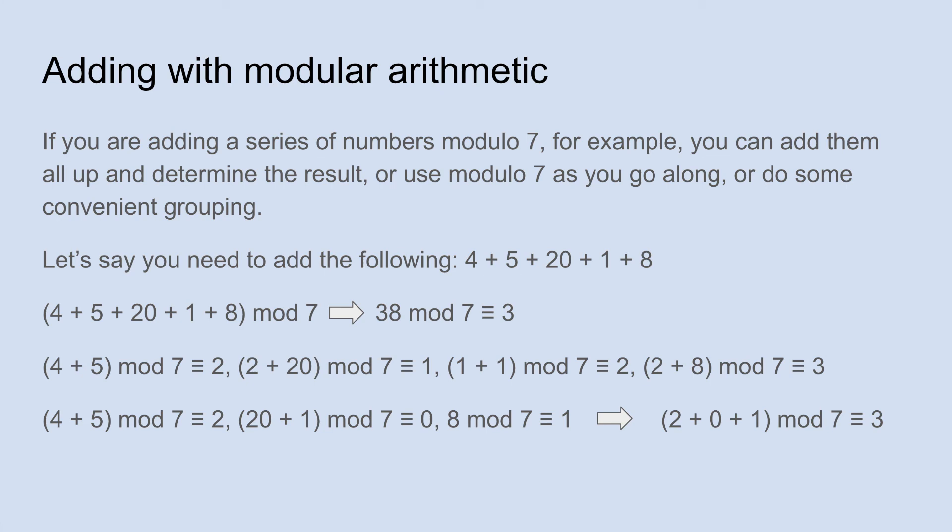And then I would say, all right, now 2 is my running total. I'll add 20 to that, and I get 22. 22 mod 7 is just 1. And so I'm starting with 1 again. I add 1 to that. I get 2. I don't have to do anything to that. 2 mod 7 is just 2.